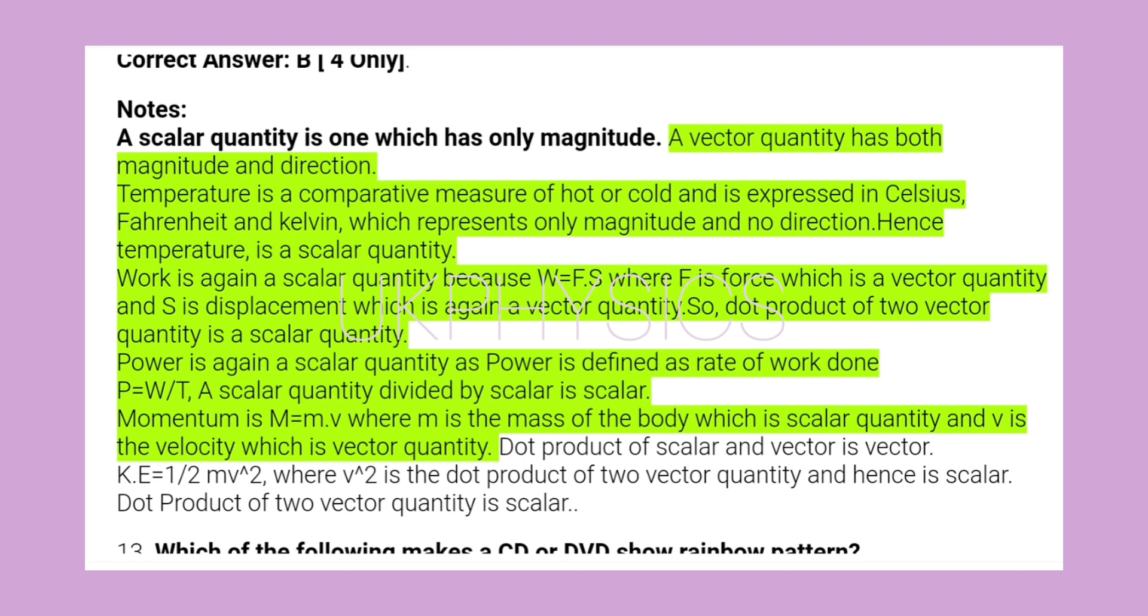Work is again a scalar quantity because W = F·S where F is force which is a vector quantity and S is displacement which is again a vector quantity. So dot product of two vector quantities is a scalar quantity. Power is again a scalar quantity as power is defined as rate of work done, P = W/T. A scalar quantity divided by scalar is scalar. Momentum is M = m·v where m is the mass of the body which is scalar quantity and v is the velocity which is vector quantity.